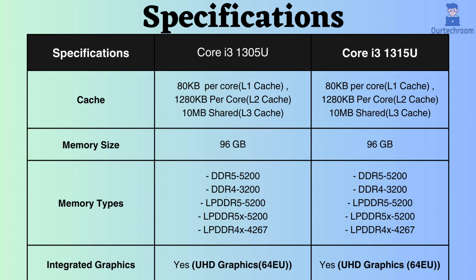The L1, L2, and L3 cache sizes are respectively 80 KB per core, 1,280 KB per core, and 10 MB shared for both processors. Both of these processors support up to 96 GB of RAM. They also support LPDDR4 and LPDDR5, DDR4, and DDR5 RAM, with the same frequency capacity.